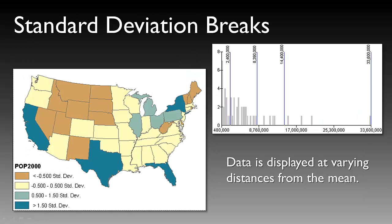The next type of classification method is called a standard deviation break. Standard deviation classification methods find the mean value and then place class breaks above and below that mean at intervals of either a quarter, half, or one standard deviation, until all data values are contained within the classes. Values that are beyond three standard deviations from the mean are aggregated into two classes — these are often known as outliers. In this case, you can see our population data. Our western states and a few of the far northeastern states are now classified into negative 0.5 standard deviations from the mean. If we look at the states in blue — California, Texas, Florida, and New York — we can see that those states are 1.5 standard deviations above the mean value. When using standard deviation breaks, it's important that the user understand how the data is being displayed.